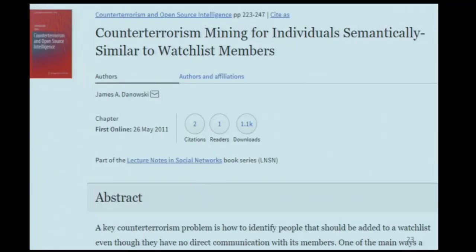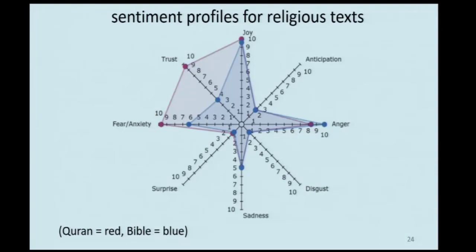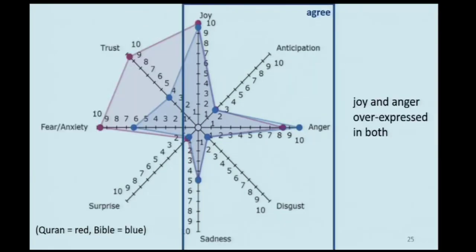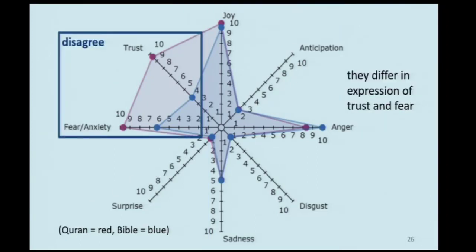This is already being done for terrorism — counter-terrorism data mining using ontology. You can use the emotion ontology to create sentiment profiles also for religious texts. Both the Quran and the Bible have very high components of joy and anger. They disagree on fear and trust: the Bible is low on fear and low on trust, whereas the Quran is high on fear and high on trust.